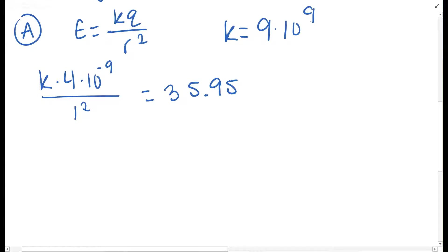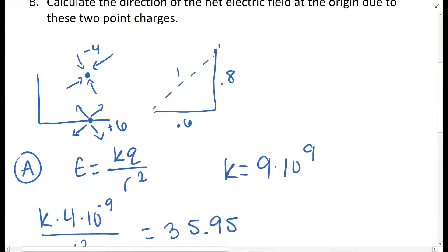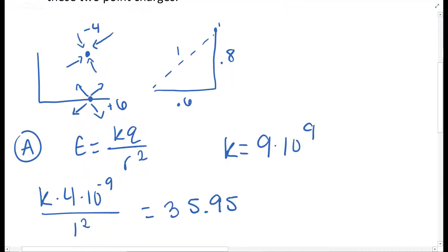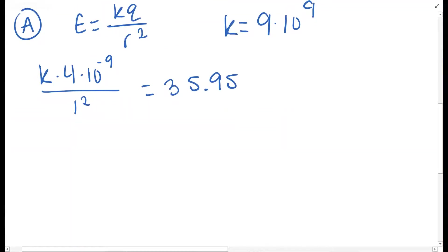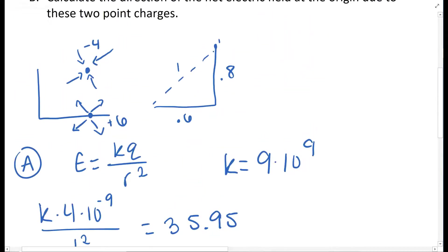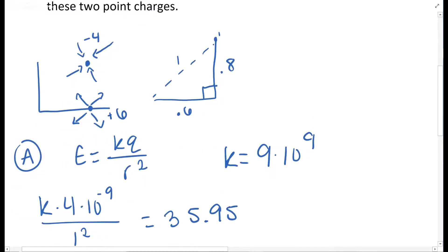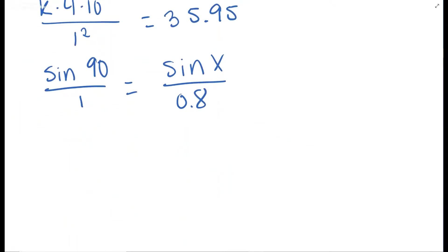The thing is, this 35.95 is in this direction, and we want only x and y components. That's going to be the easiest way for us to solve this. So what we need to do is find the angle that that is at. We're going to use the law of sines. This is a 90 degree angle. So the sine of this angle over 1 is the same thing as the sine of this angle over 0.8. So you multiply these two, divide by 1, and then the inverse sine of that to get an x of 53.13 degrees.